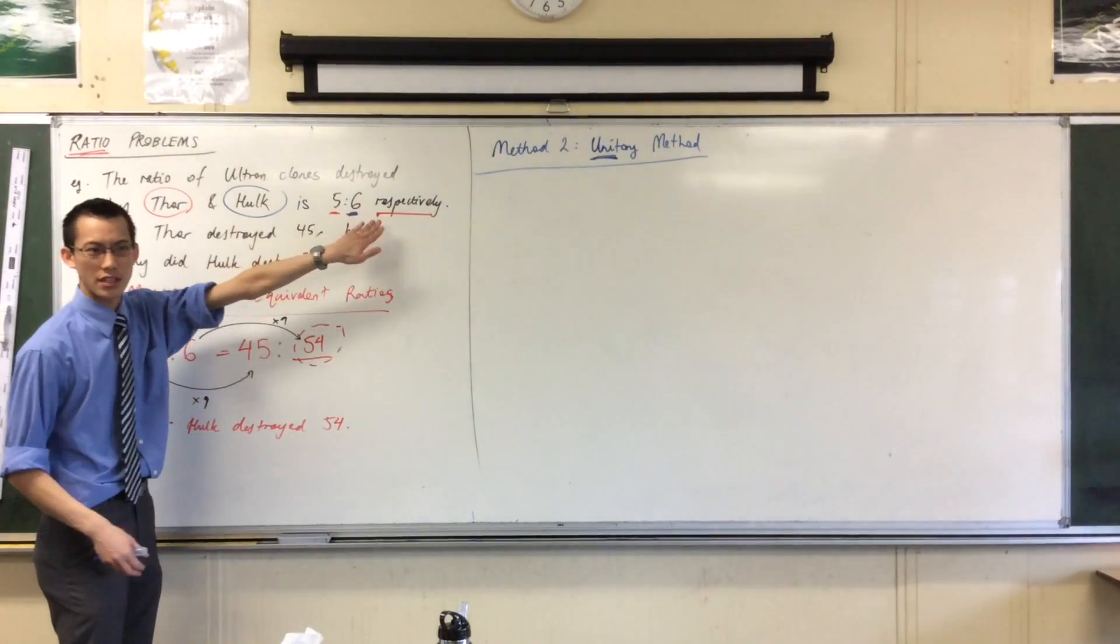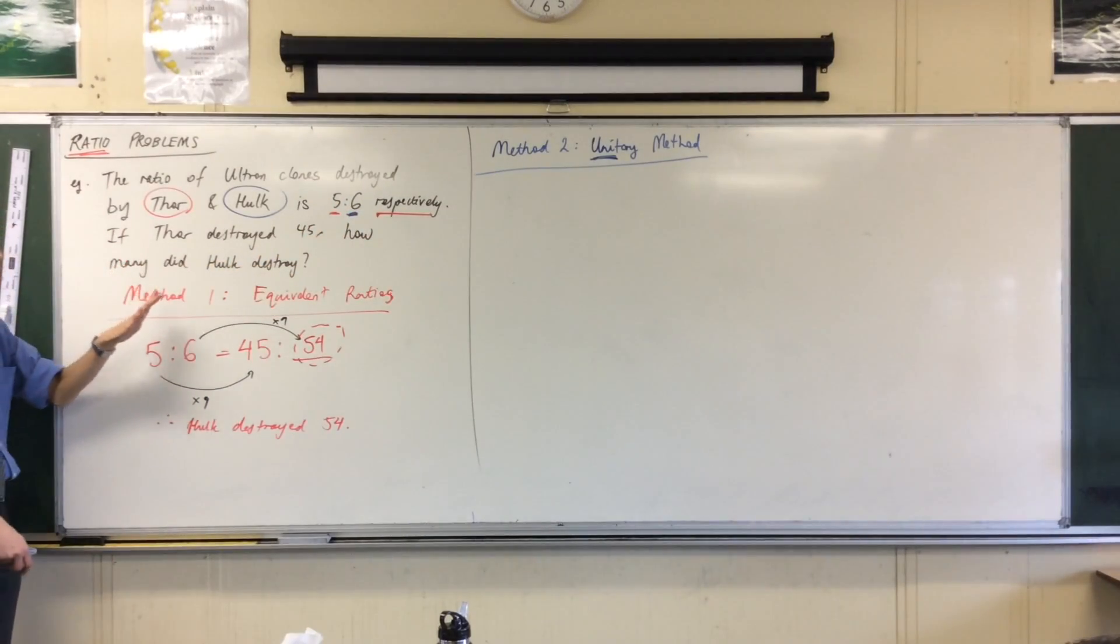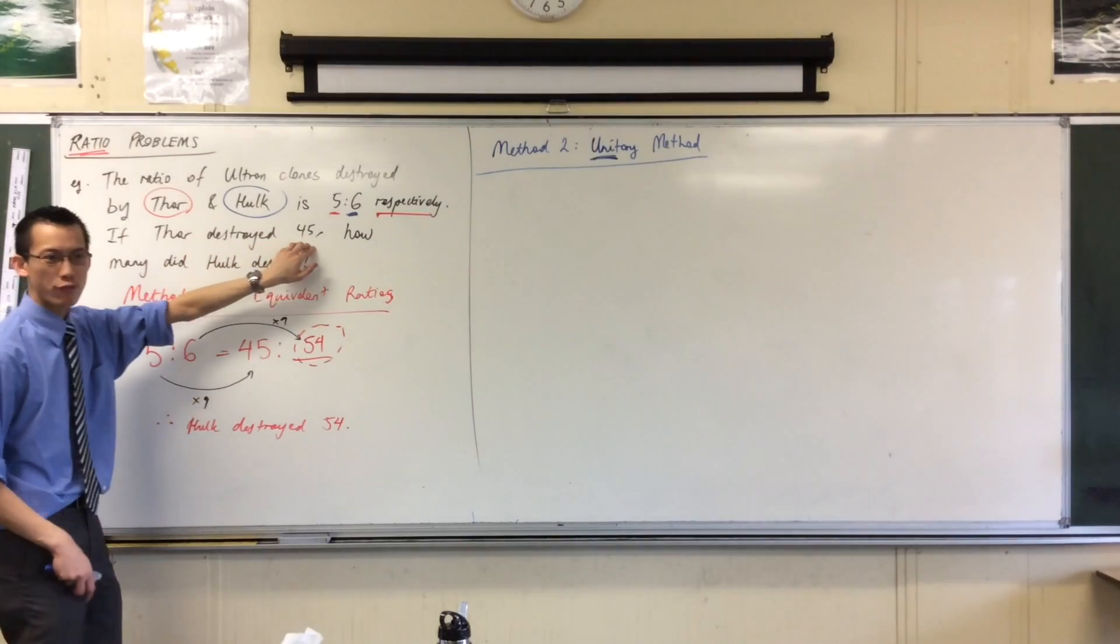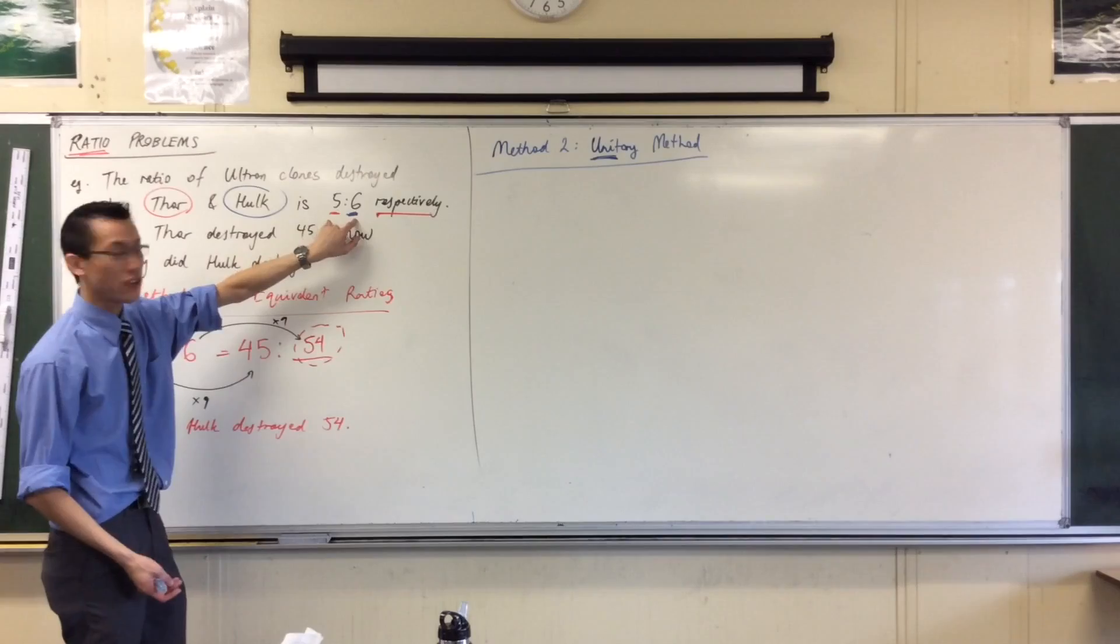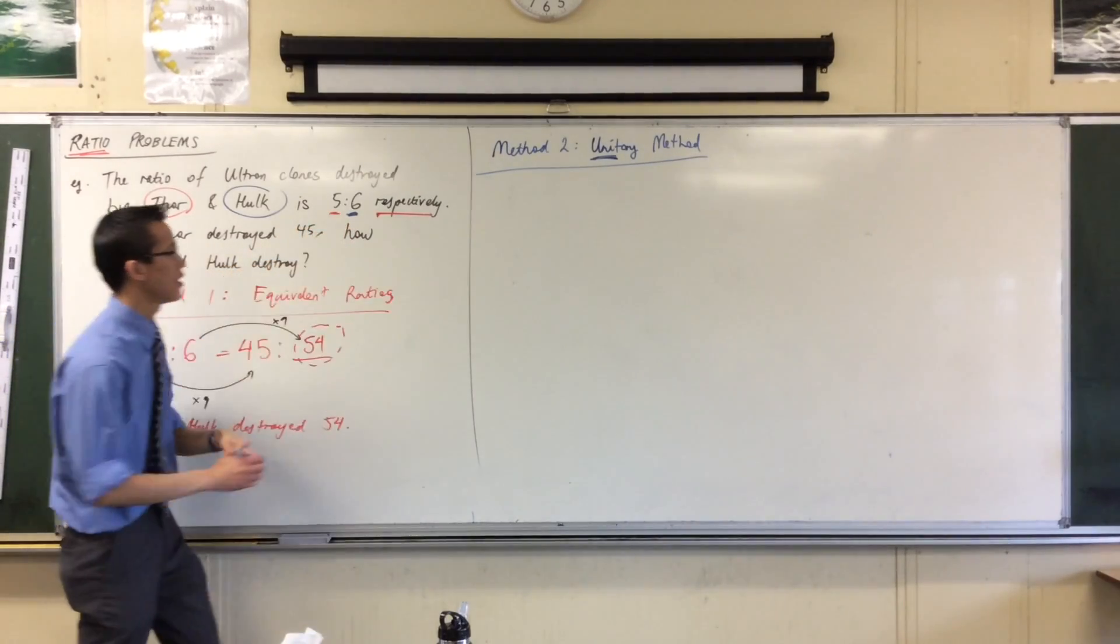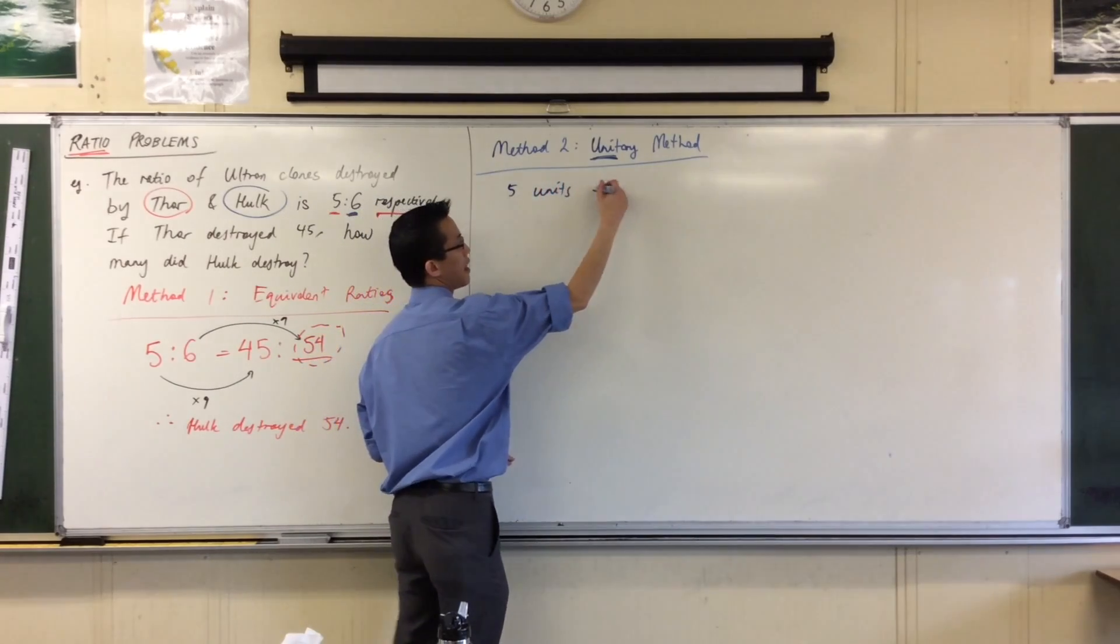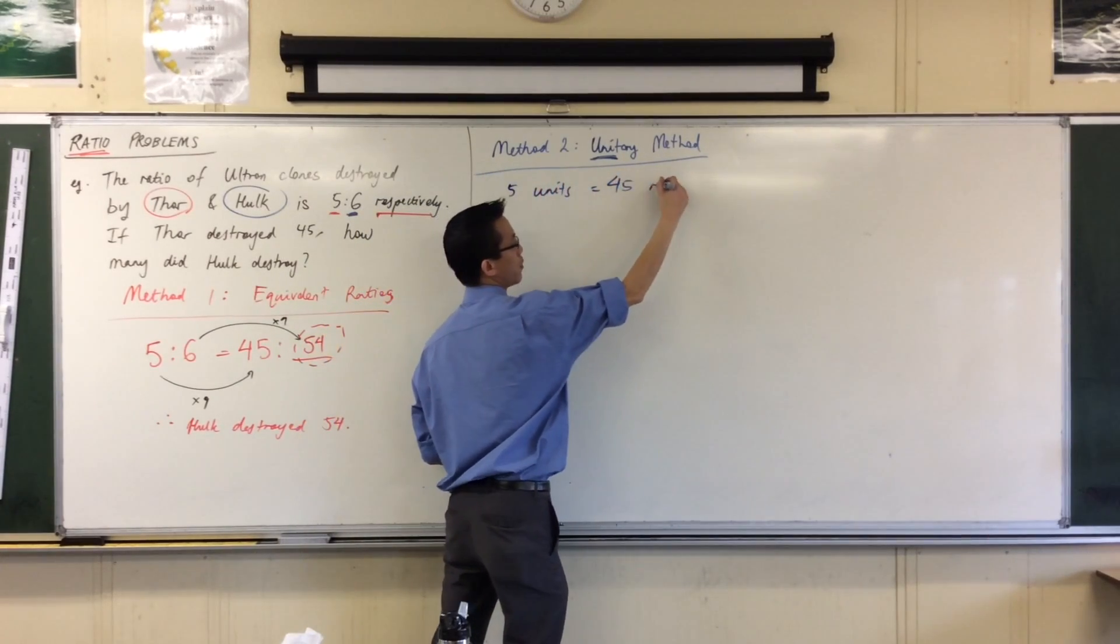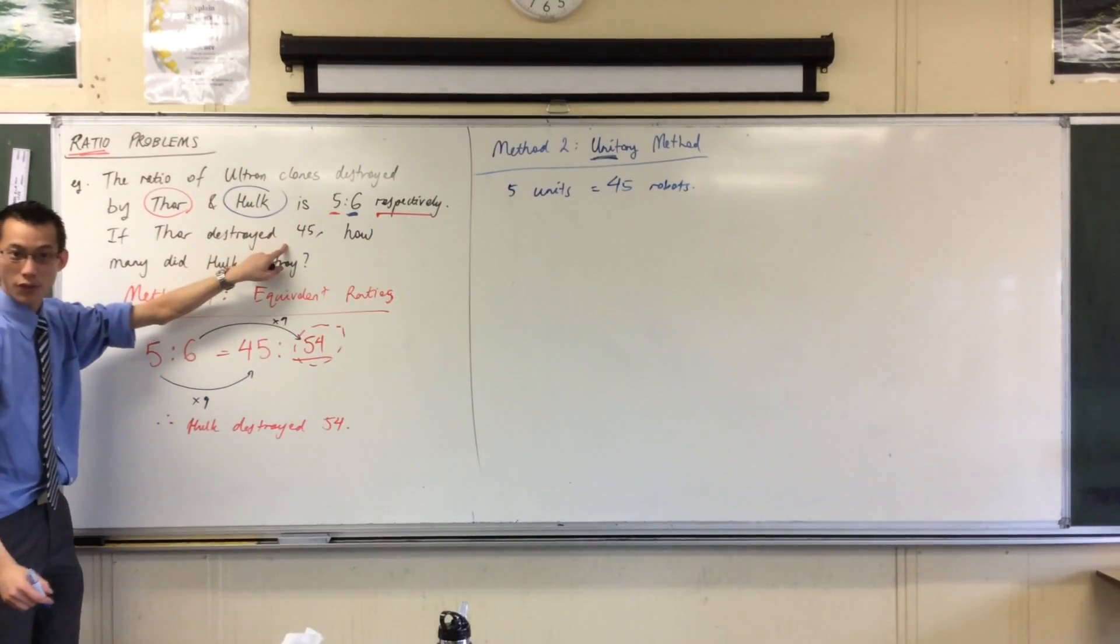So I'll guide you through this. You see how they said there's five to six? Five to six? So that means that 45 represents five units in this question. There are this many units, and 45 represents five units. So if I say, five units equals 45 robots.